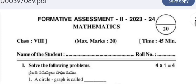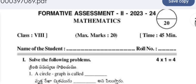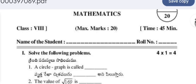Hello, welcome to my YouTube channel. Today's video is about Formative Assessment 2 (FA2) 2023-24 Mathematics for Class 8. Maximum marks are 20 for 45 minutes. In 2023-24, FA2 was conducted for 20 marks, but this year the FA2 exam will be conducted for 35 marks. You can write the student's name and roll number.